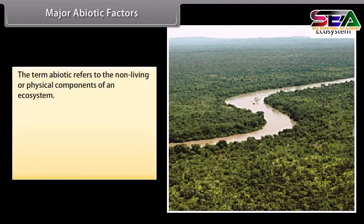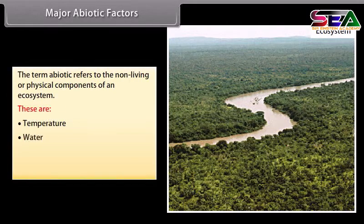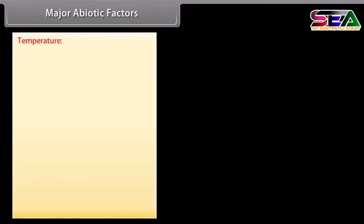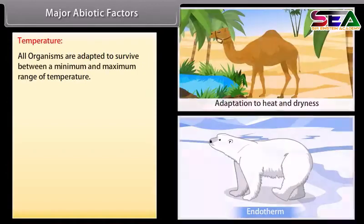The term abiotic refers to the non-living or physical components of an ecosystem. These are temperature, water, light, and soil. All organisms are adapted to survive between a minimum and maximum range of temperature.